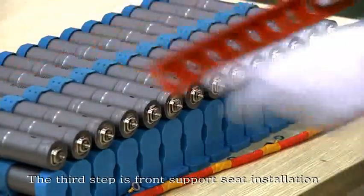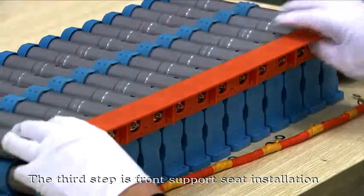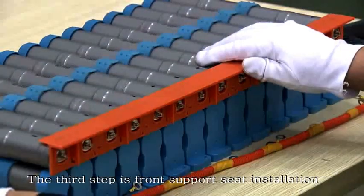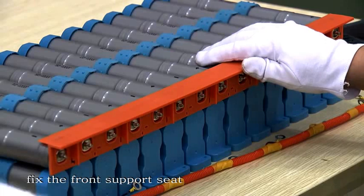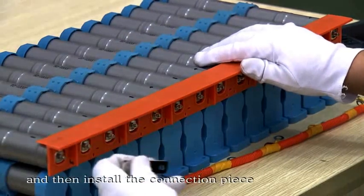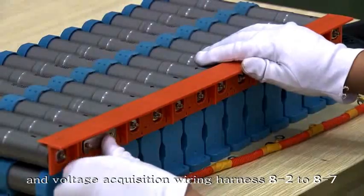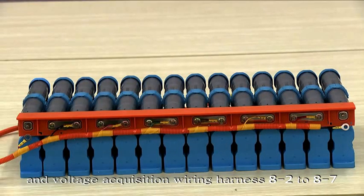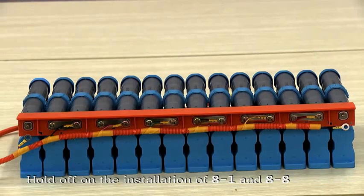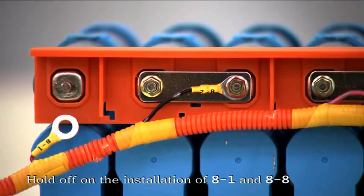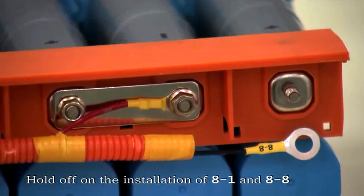The third step is front support seat installation. Firstly, fix the front support seat, and then install the connection piece and voltage acquisition wiring harness 8-2 to 8-7. Hold off on the installation of 8-1 and 8-8.